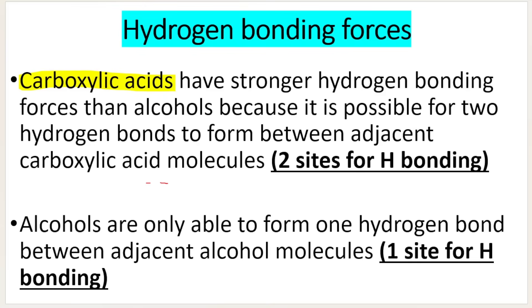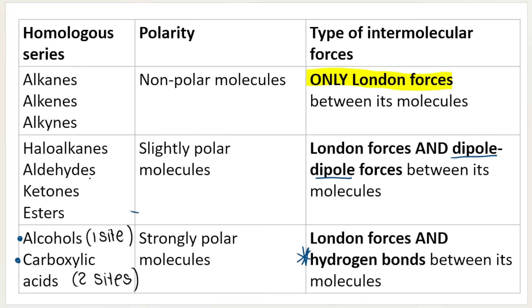Carboxylic acids have the strongest intermolecular forces of all the homologous series, because they have two sites for hydrogen bonding. Then comes alcohols, which also have hydrogen bonding but only one site. Third come the molecules with dipole-dipole forces — haloalkanes, aldehydes, ketones, esters. And in last place, alkanes, alkenes, and alkynes have the weakest intermolecular forces because they only have London forces.